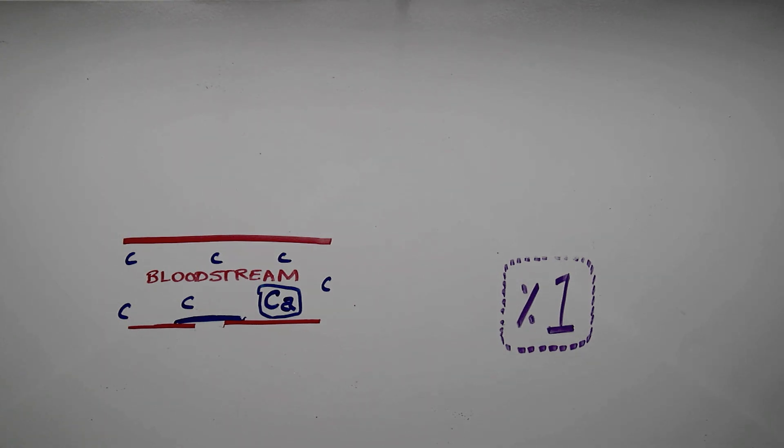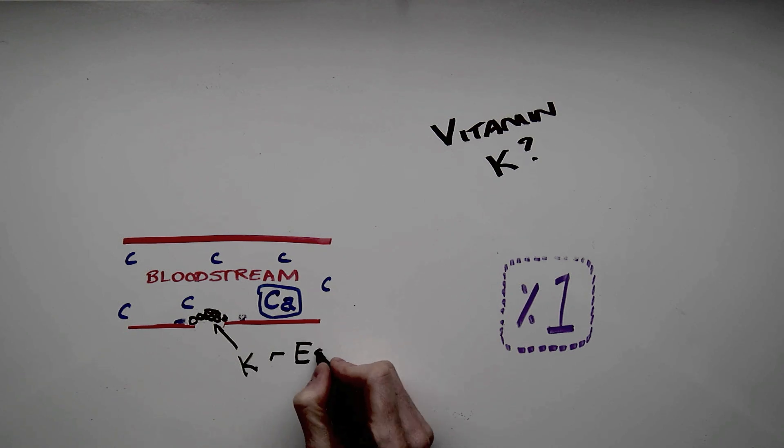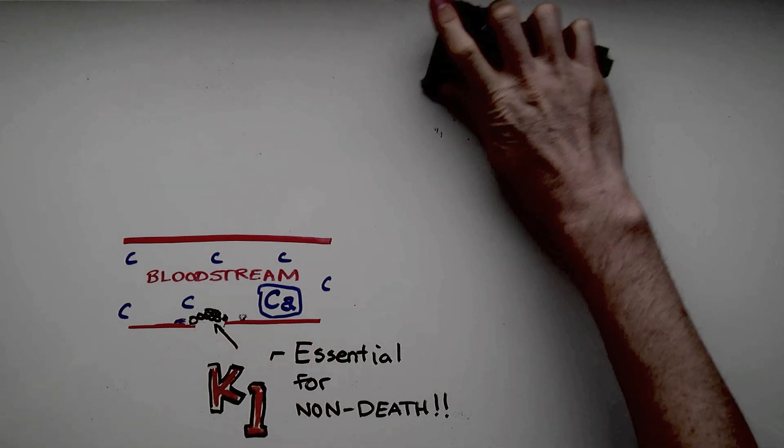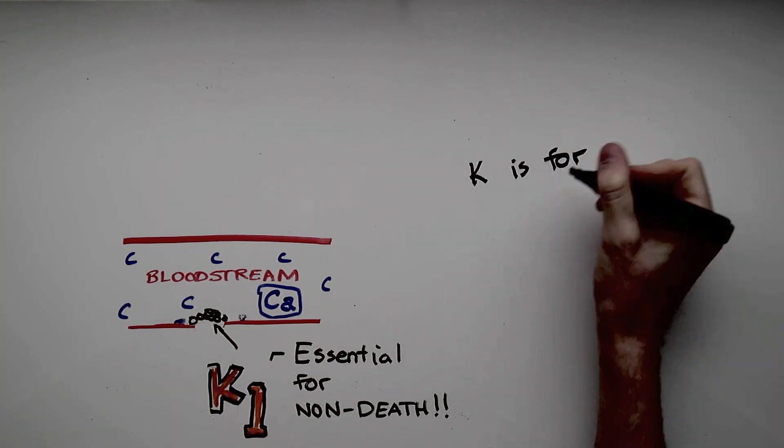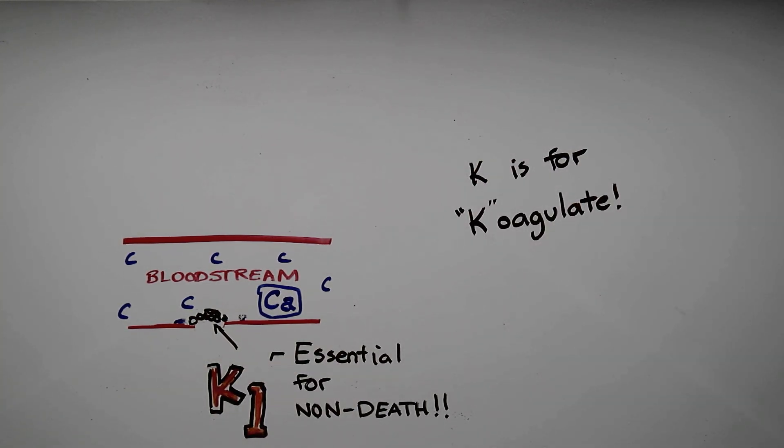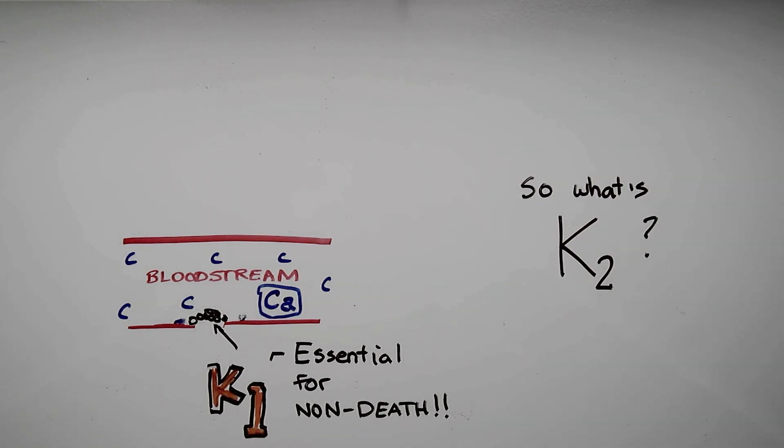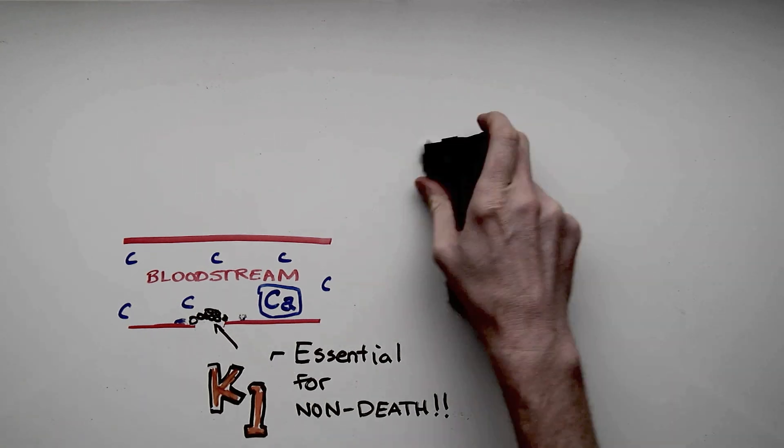But I thought we were talking about vitamin K? Well, vitamin K is really important. It's essential for not dying. Without vitamin K1, you could potentially die from a nosebleed because K is a key ingredient in the coagulation of blood or blood clotting. But then what about K2? Isn't that what we're talking about?